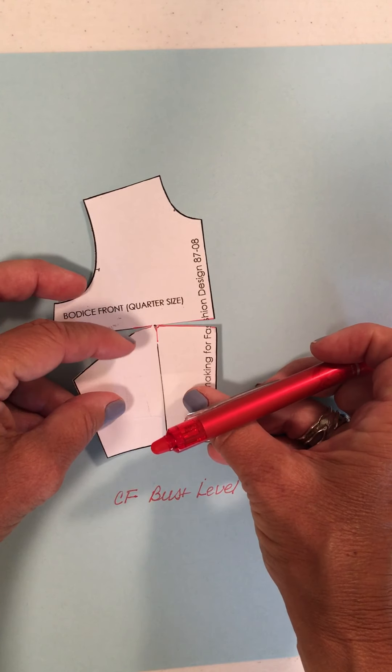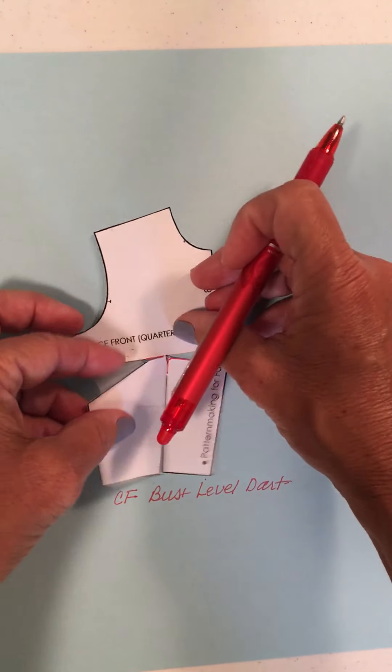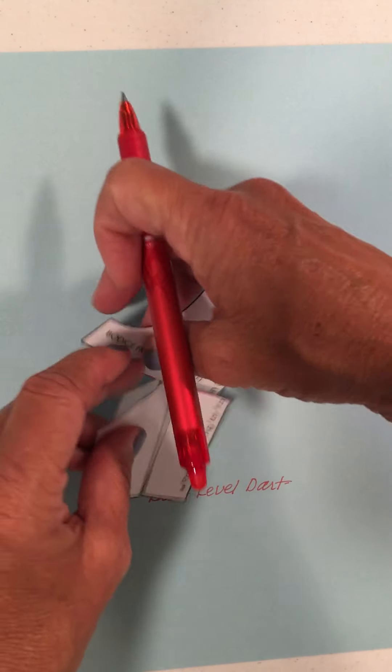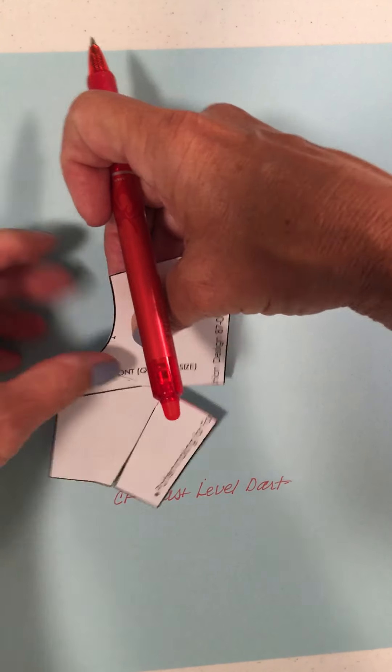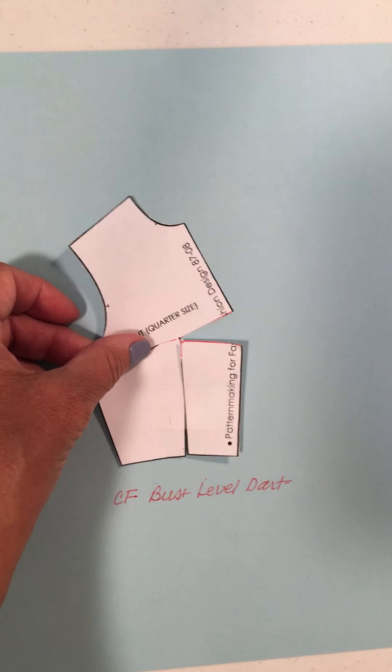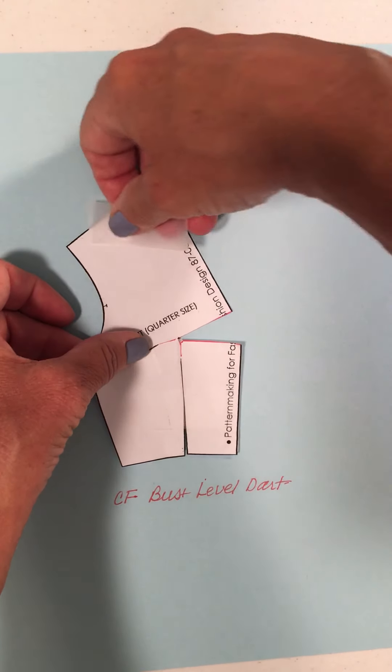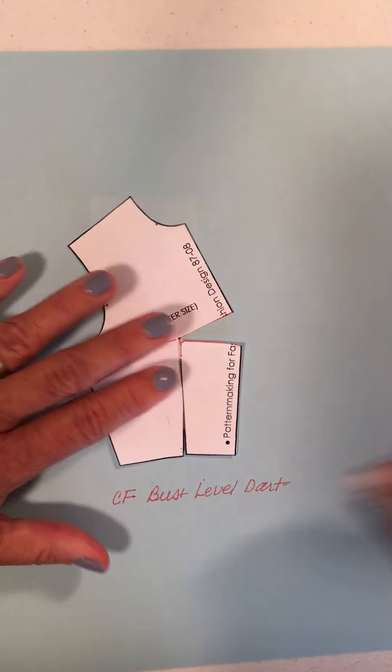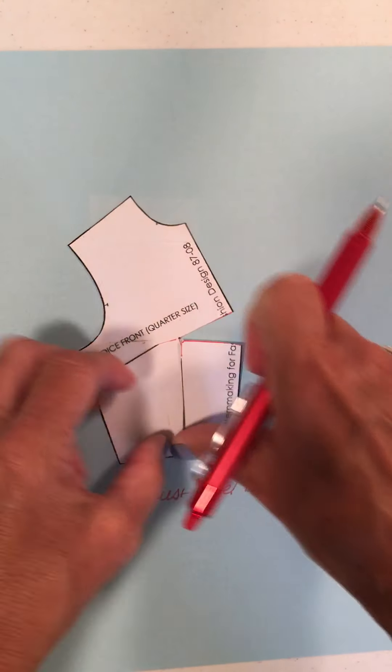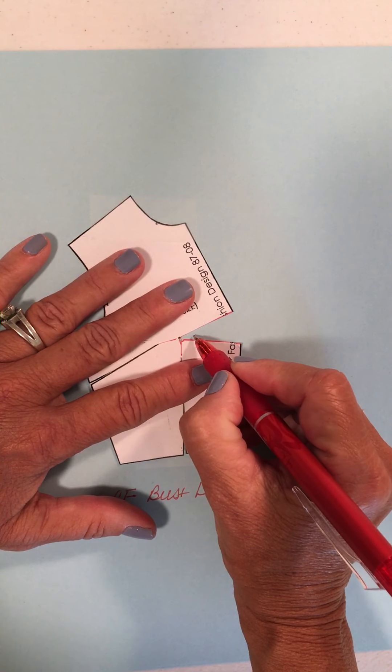But I have closed that one up. And I have closed this one up. So I can put this one down. Now, again, if I wanted to draw the bust points, then we'll talk about adding seam allowance.